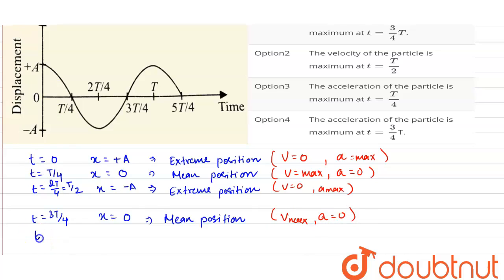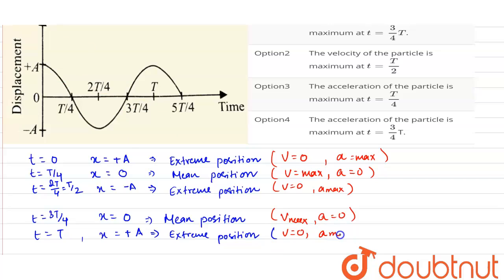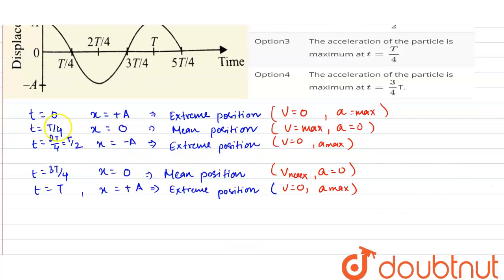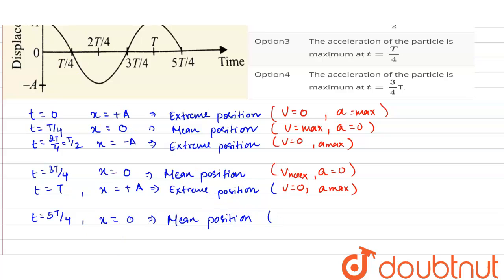At t = T, the displacement of the particle is again maximum, so it is at the extreme position — velocity is 0 and acceleration is maximum. At t = 5T/4, the displacement of the particle is 0, so the particle is at the mean position, where velocity is maximum and acceleration is 0.